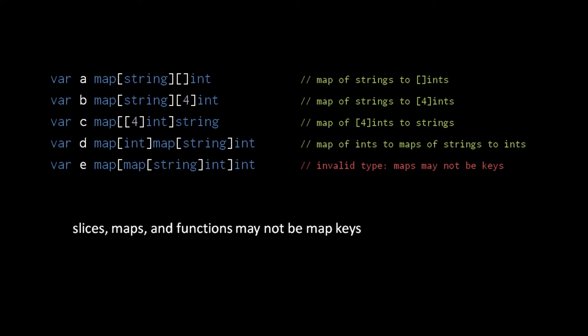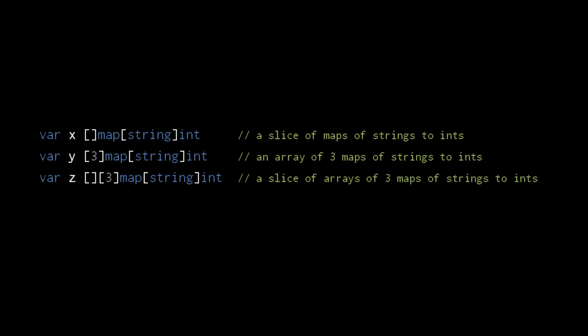Fortunately, using functions, slices, and maps as keys is probably not something we would commonly want to do anyway. Lastly, just like with every other type in the language, we can make arrays and slices of maps. Here we have a slice of maps of strings to ints, an array of three maps of strings to ints, and a slice of arrays of three maps of strings to ints.